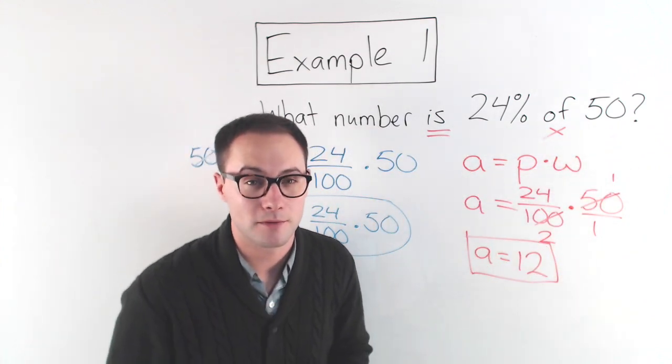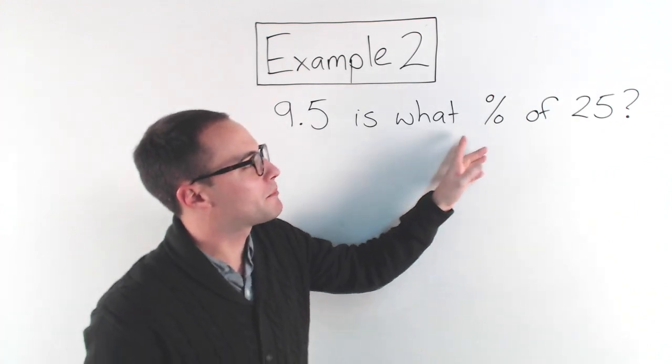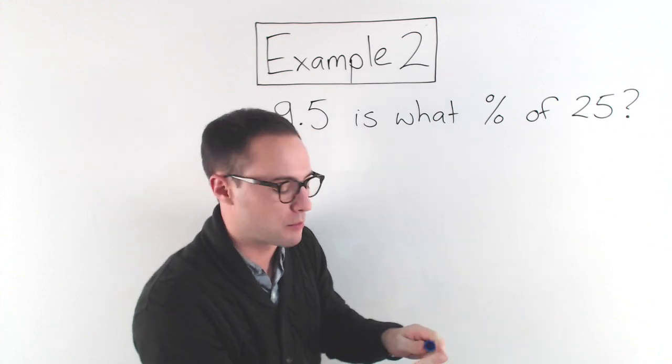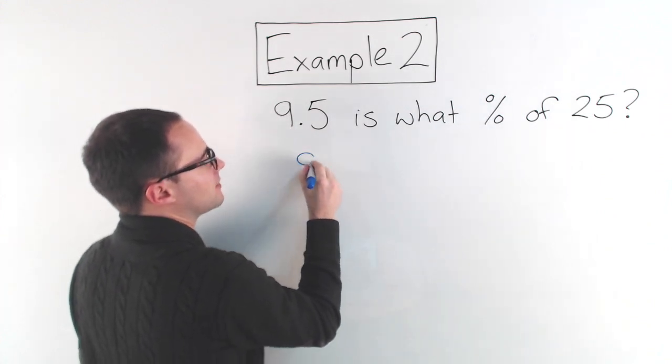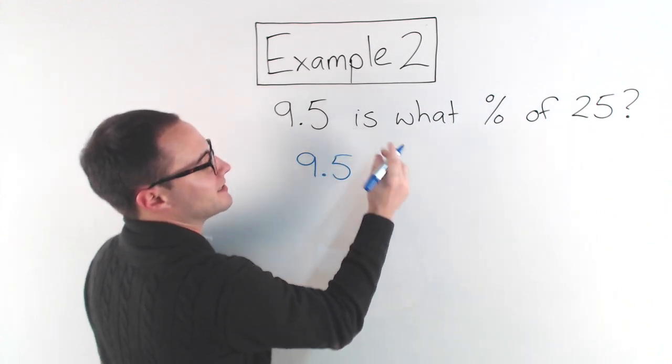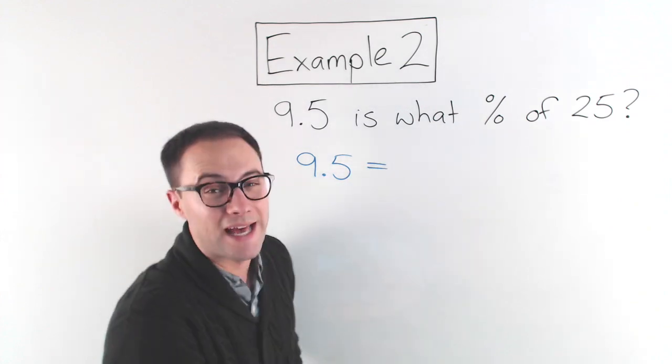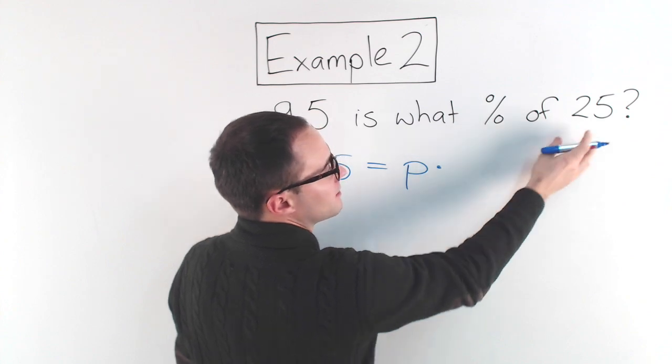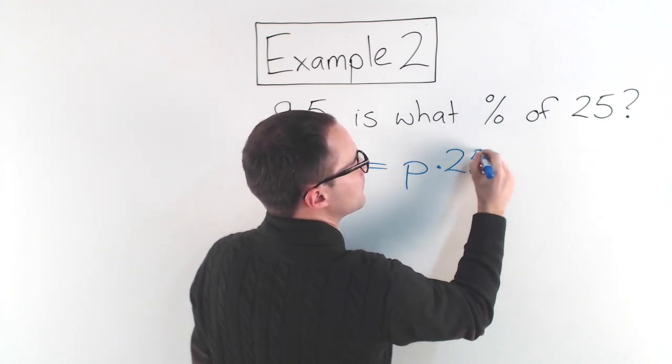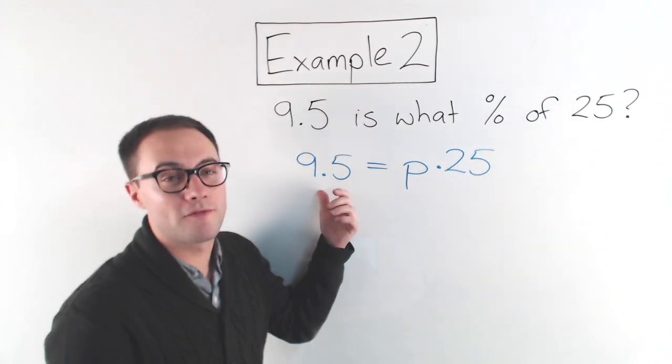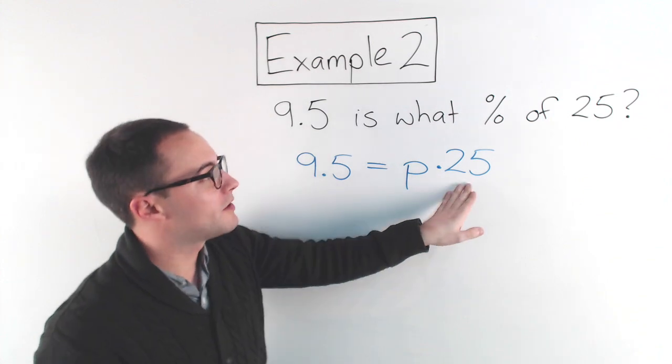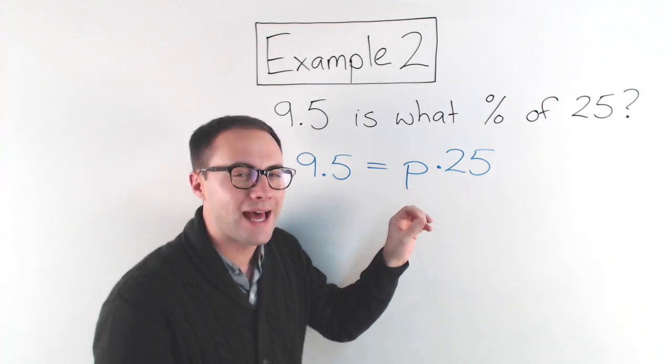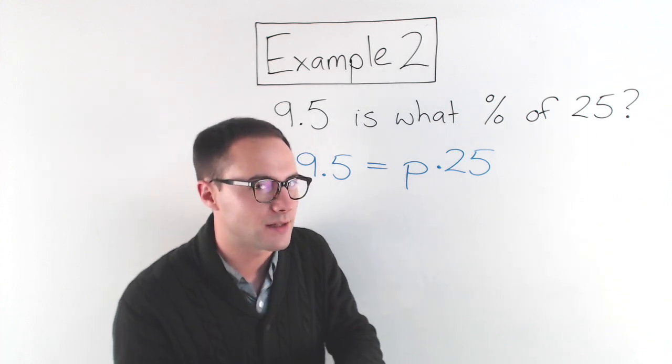Okay, example 2. 9.5 is what percent of 25? Let's just use the percent equation, not worry about proportions. So here we go. 9.5 is means equals. What percent? That's what we don't know. That's going to be our variable P. Of means multiplication of 25. So 9.5 is the part. 25 is the whole. P is the percent. And remember, that's representing percent as a decimal or a fraction. That's really important.